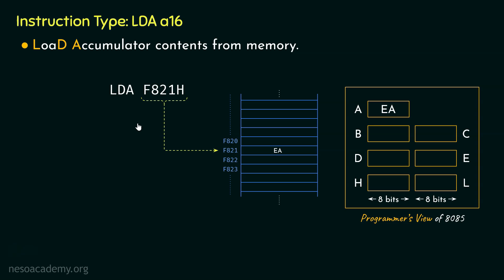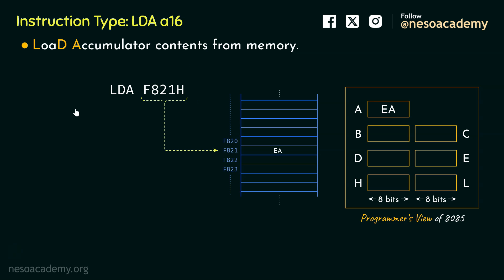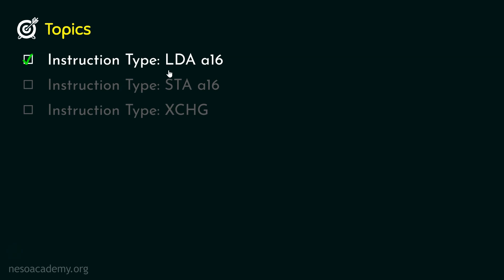We didn't have to involve the HL register pair and we did all the work using only a single instruction. In the previous example where we used LXI RP D16 along with MOV A, M, both instructions within the memory occupied 4 bytes of space. Whereas this entire instruction saves one more byte — using only 3 bytes we can perform the same operation. So remember, the instruction type LDA A16 is a 3-byte long instruction, LDA stands for load accumulator contents from memory, and the memory location is sent directly in the instruction itself.